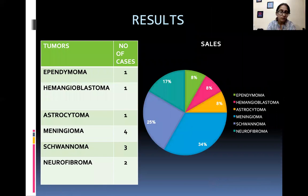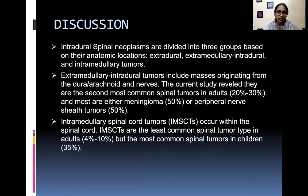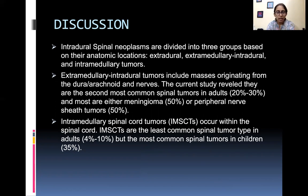Results: out of 12 cases included in the study, one was ependymoma, one hemangioblastoma, one astrocytoma, four meningiomas, three schwannomas, and two neurofibromas. In discussion, intradural spinal neoplasms are divided based on anatomic location into extramedullary intradural and intramedullary tumors. Extramedullary intradural tumors are the most common spinal tumors in adults at 20 to 30 percent of cases, and most are either meningiomas or peripheral nerve sheath tumors, each comprising about 50 percent. Intramedullary tumors are the least common in adults at 4 to 10 percent, but the most common in children at about 35 percent.